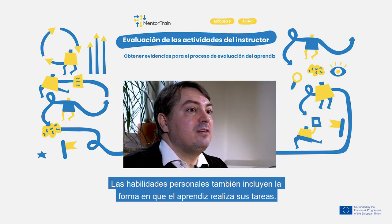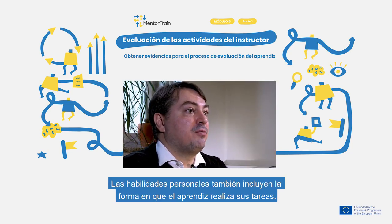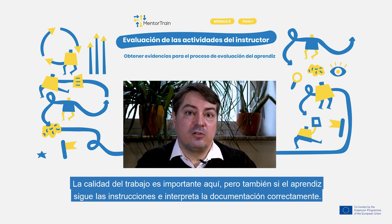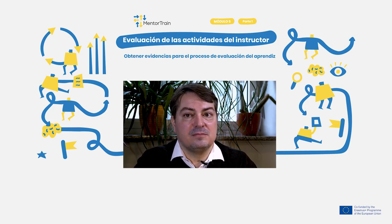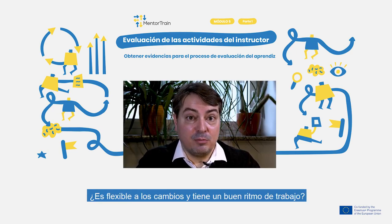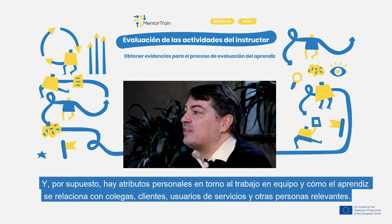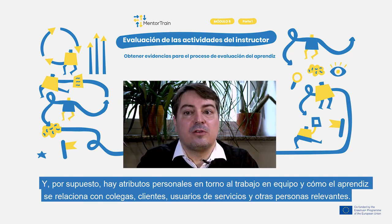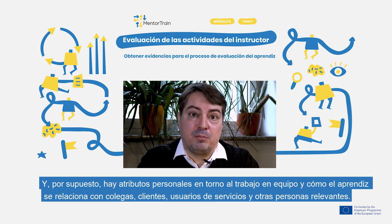Personal abilities also include the way the apprentice performs their work. The quality of work is important here, but for example also if they follow instructions and interpret documentation correctly. And can they work autonomously, show initiative, are they flexible to change and have a good work pace? And of course there are personal attributes around teamwork and how the apprentice relates to colleagues, customers, service users and other relevant people.